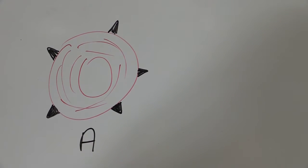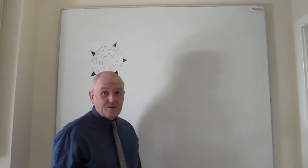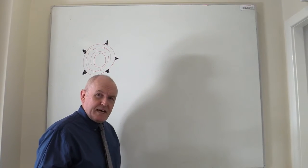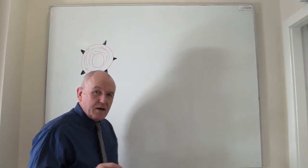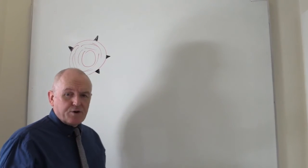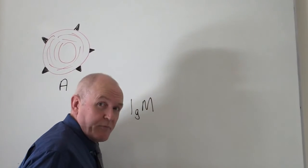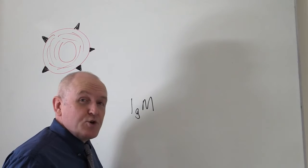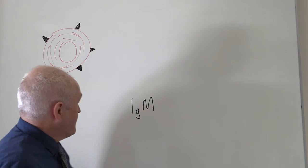Blood consists of red cells and the plasma, because the cellular component floats in the plasma. In the plasma there are large molecules called immunoglobulins — these are globular immune proteins. In the blood there's a particular type called immunoglobulin type M, or IgM. These are the antibodies to the red cells of a potential recipient's or donor's blood.